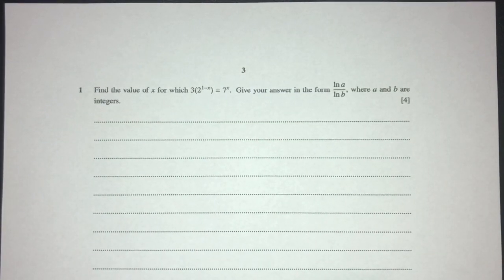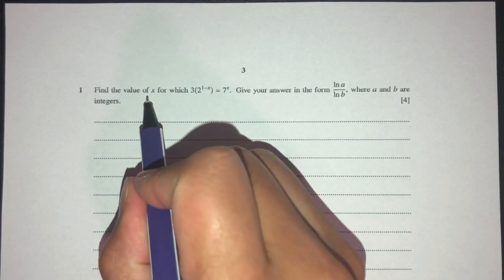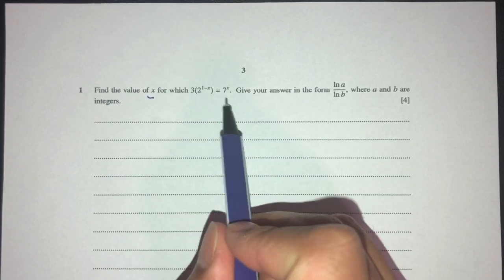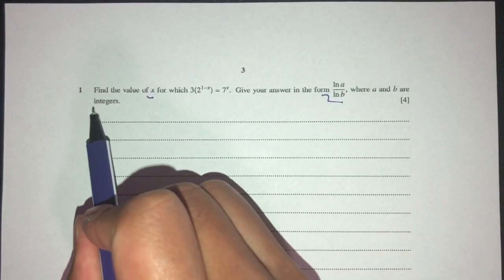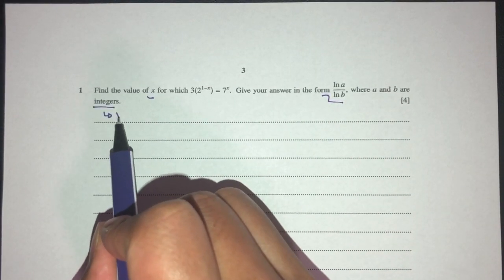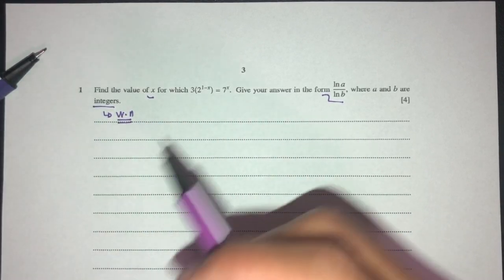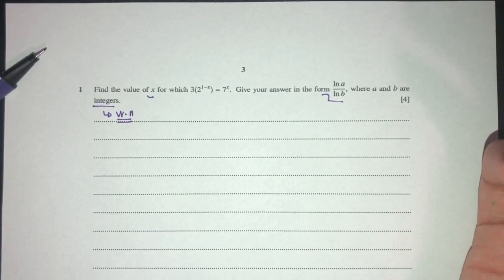Let's move on to question number 1. Here we have to find the value of x for which this equation is true. Give your answer in this form where a and b are integers, meaning whole numbers. We have to know this definition. The main goal here is to make x become your subject.